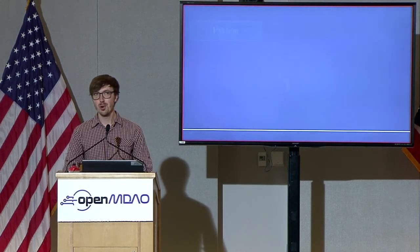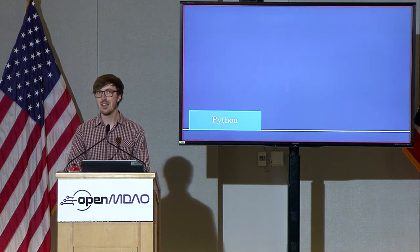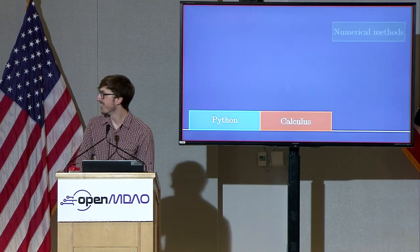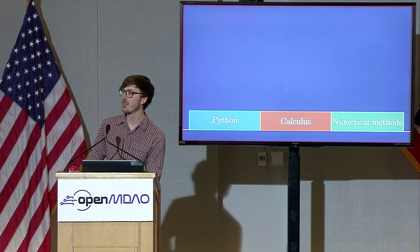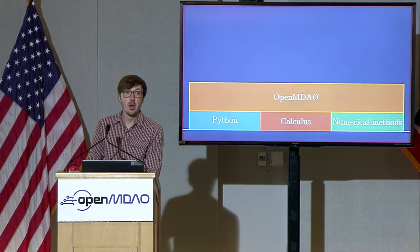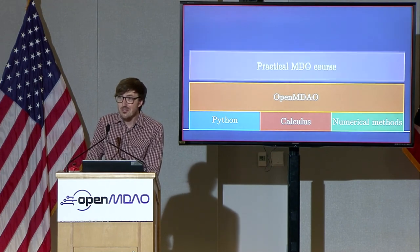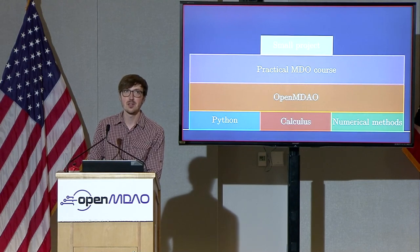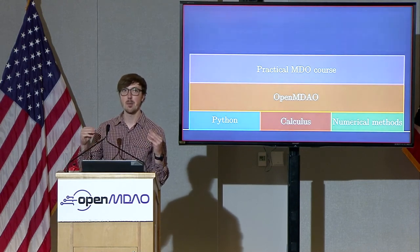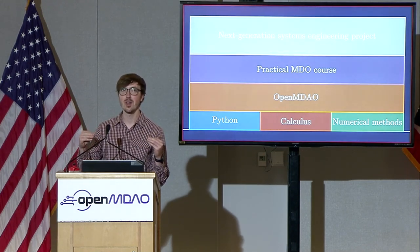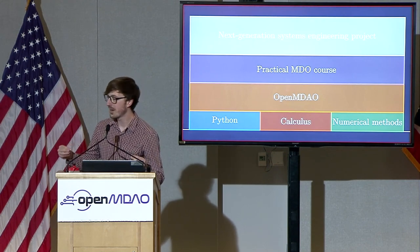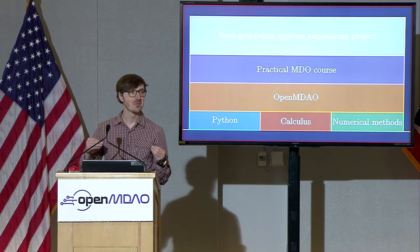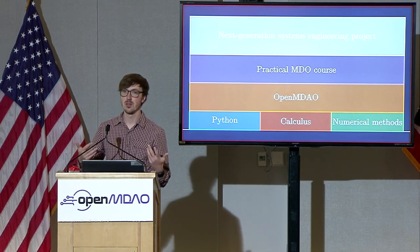Let's talk about your prerequisite knowledge — what you need to know. I'm not going to teach you Python; I can't do that. I can't teach you calculus. I assume you come in with some knowledge of Python, calculus, a bit of numerical methods, and hopefully some OpenMDAO knowledge. This course is on top of all these other things, and it will allow you to do the next generation systems engineering project. But it assumes you have some prerequisite knowledge.